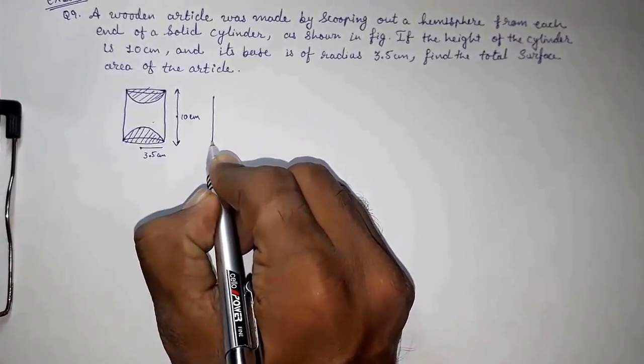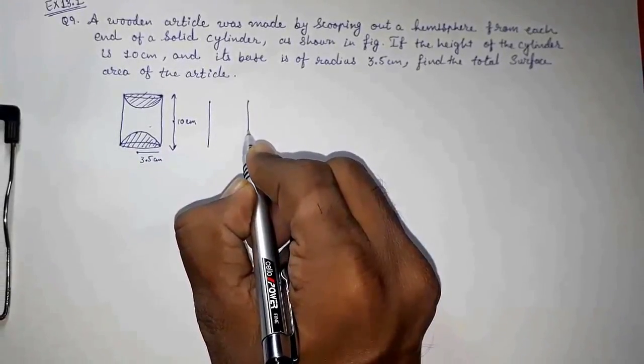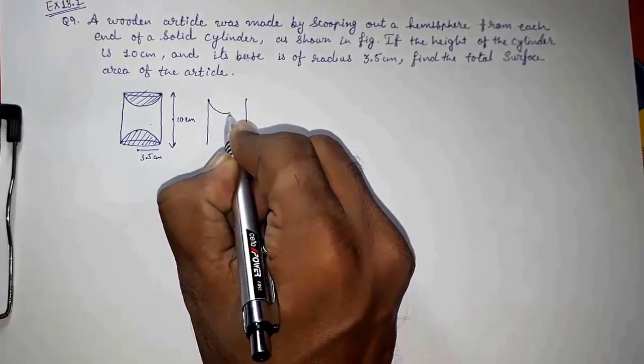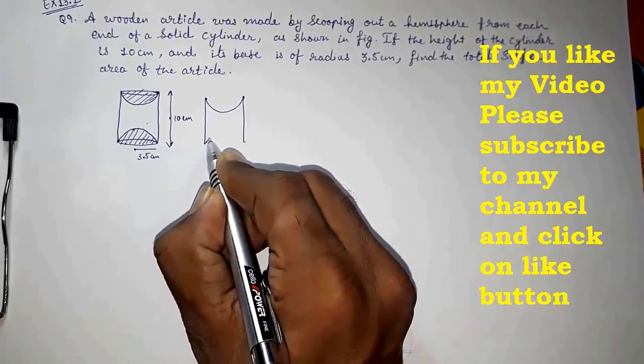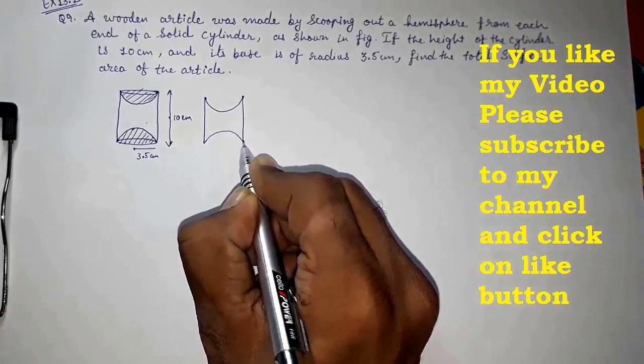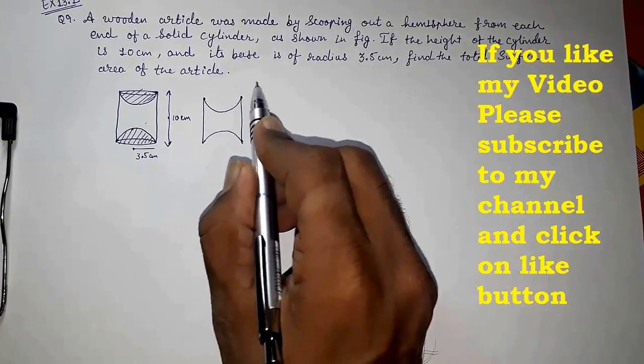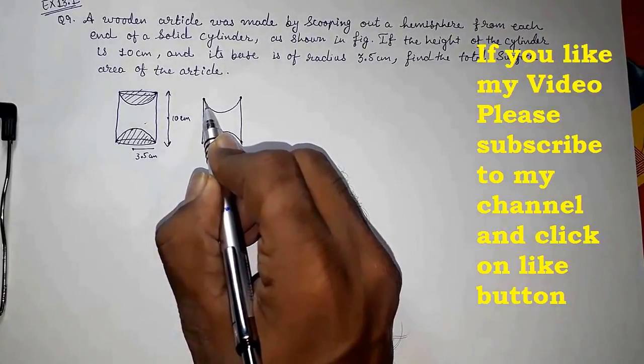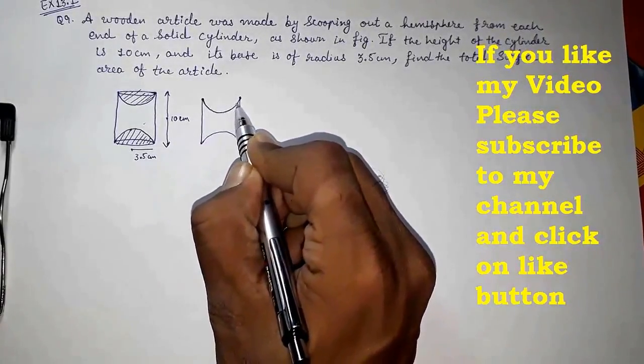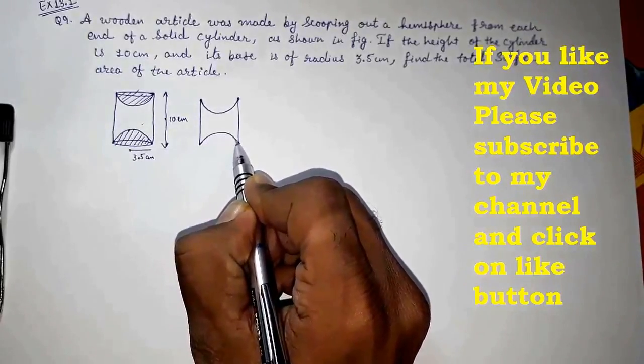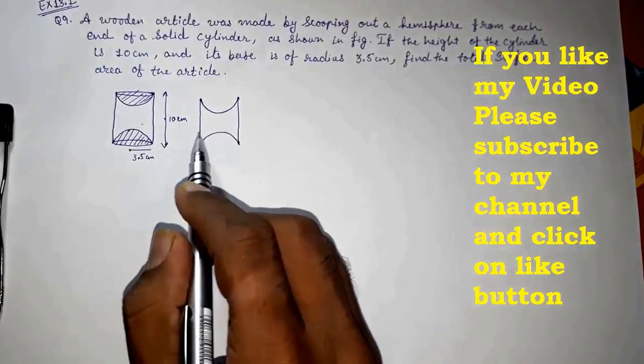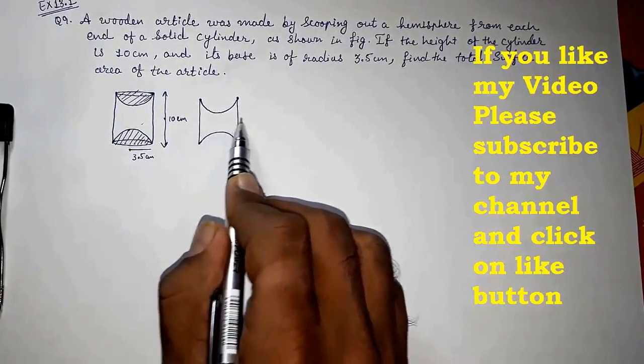Look here. This is our cylinder and we are taking out two hemispheres from both its upper and lower end. So actually when we are taking out that hemisphere, we are getting an impression of that hemisphere on our remaining figure.